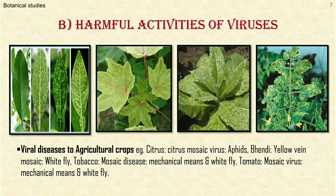Viral diseases of agricultural crops. Almost all plant viruses infect their host plants and cause diseases to them. For example, in citrus we find citrus mosaic virus, disseminated by aphids. In bhindi, we observe yellow vein mosaic disease, transmitted by a whitefly. In tobacco, we find mosaic disease, transmitted by mechanical means and also by whiteflies. In tomato, we find mosaic virus, transmitted by mechanical means and also by whiteflies.